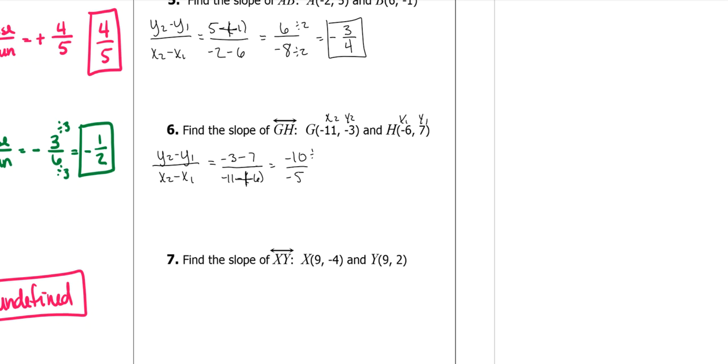5 can go into both. Well, actually, let's just call it what it is. This is a division. Negative 10 divided by negative 5 is a positive 2.